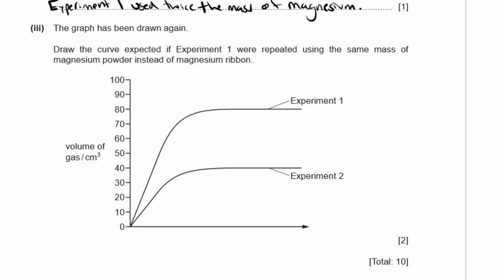Three, the graph has been drawn again. Draw the curve expected if experiment one were repeated using the same mass of magnesium powder instead of magnesium ribbon. So they use the powder instead of the ribbon. So powders, the reaction goes faster. But they used the same mass, so it would go to the same value. So you'd expect to have a curve drawn carefully all the way straight along here. That's it. So it has to level off at the same value, but it has to be steeper. It has to go faster initially than it did with just the ribbon. So we can label this as experiment one with powdered magnesium. Alright.